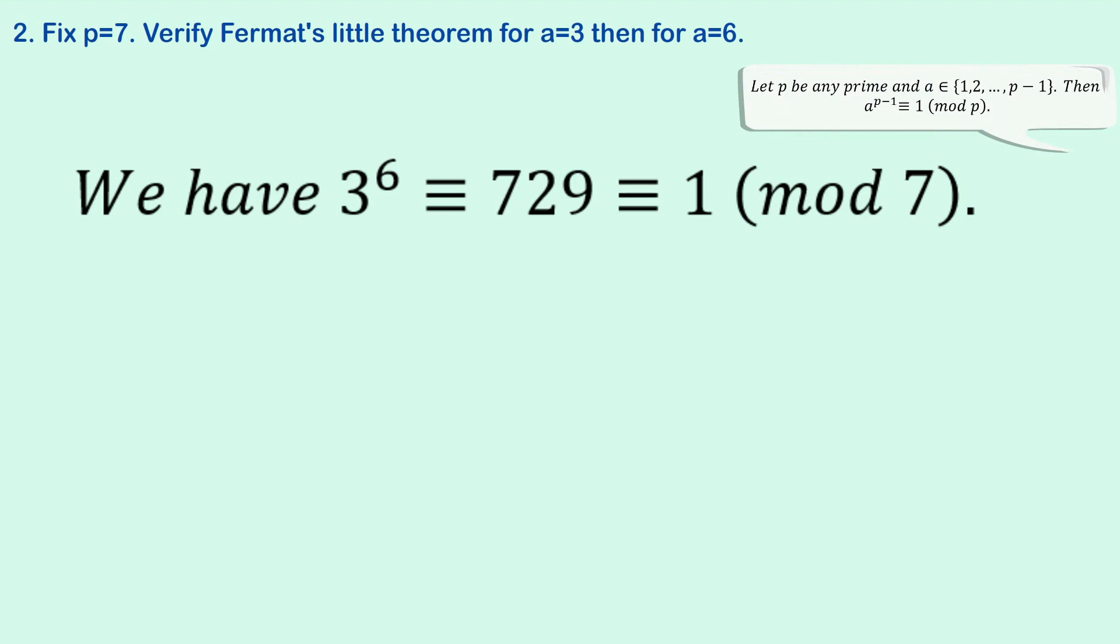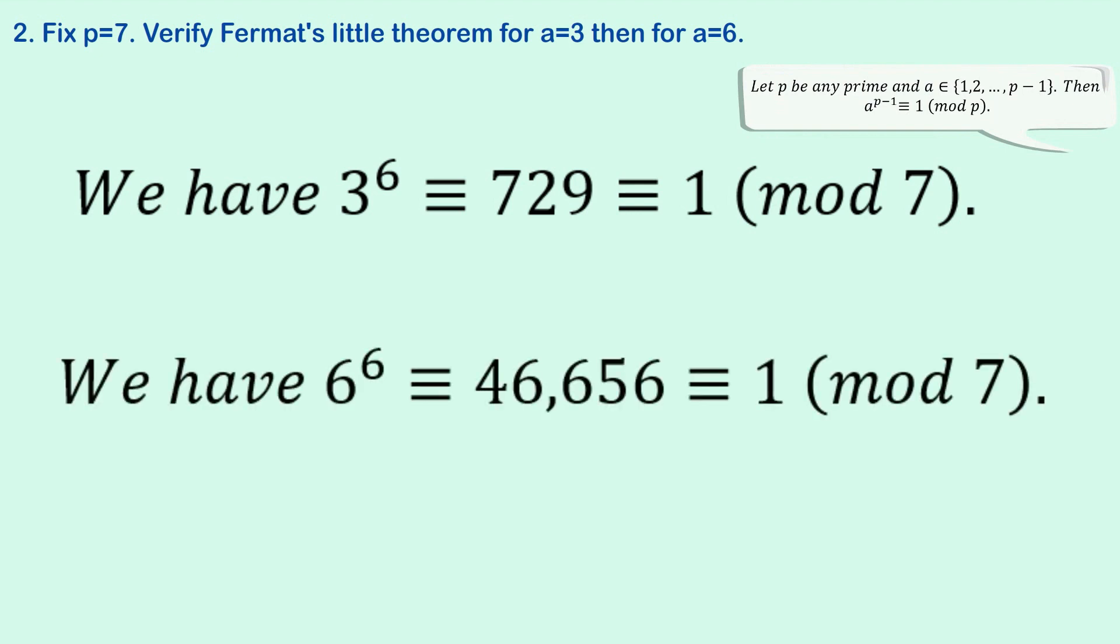And if we want to do it then for a equals 6, we just repeat it. 6 to the 6 is congruent to 46,656. And once again, if we divide that number by 7, we get a remainder of 1.